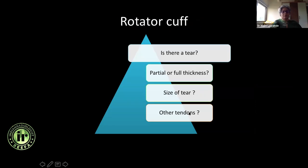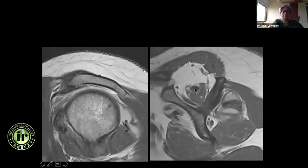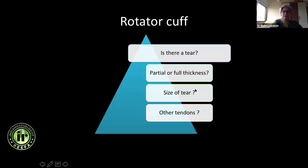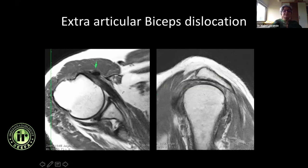Next question: what is happening to the other tendons? We are always looking at the supraspinatus, but remember the other tendons. Here, with a full thickness supraspinatus tear, the infraspinatus tendon is also torn and retracted. In this case, you can see there is no supra- or infraspinatus tendon at all.